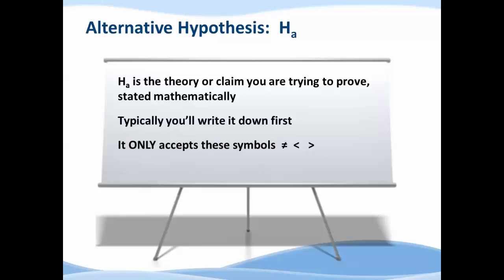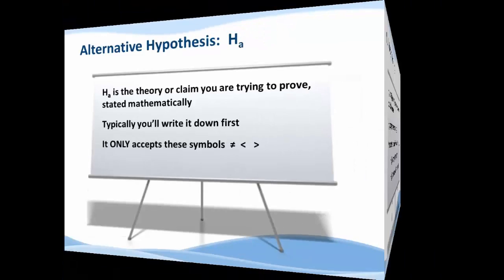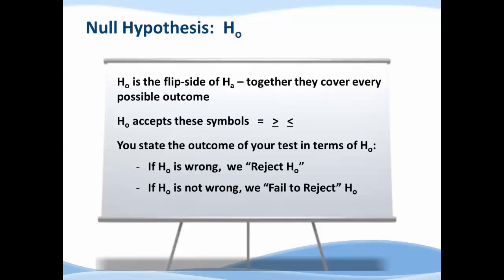Now let's look at the null hypothesis. H for hypothesis, O or zero for null. Ho is the flip side of the alternative hypothesis, and together they cover every possible outcome of your test. If Ha is set up as not equal, Ho will use an equal sign. If Ha is set up as less than, Ho will be set up as greater than or equal to. If your alternative is set up as greater than, the null will be set up as less than or equal to.